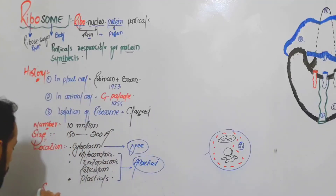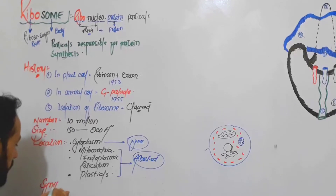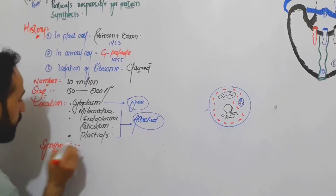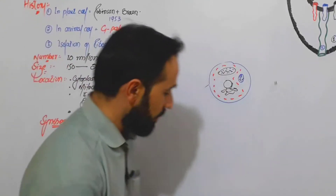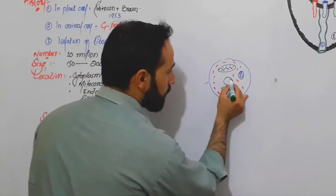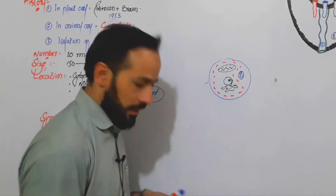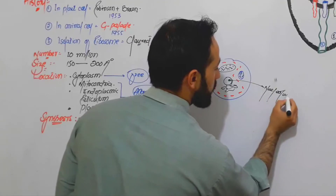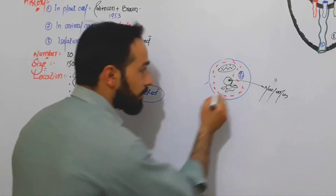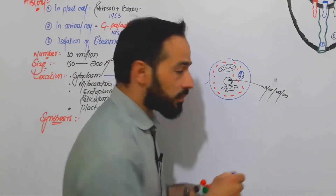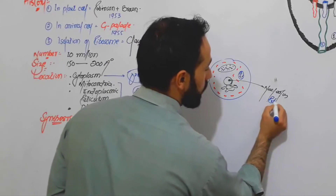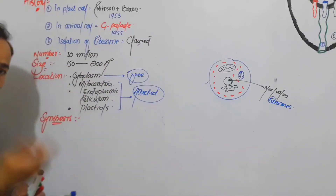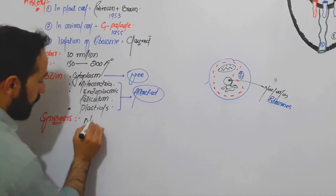Where is the ribosome synthesized? You know that while I was discussing about the structure of the nucleolus inside the nucleus, we have a structure called the nucleolus. The nucleolus is mostly responsible for making ribosomes. So we say that ribosomes are synthesized in the nucleoli.